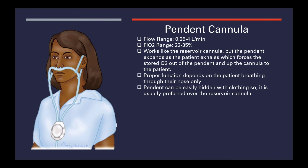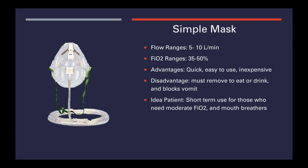The pendant cannula has the exact same flow range and FiO2 as the reservoir cannula. It works similarly except that the pendant expands as the patient exhales, which forces stored oxygen out of the pendant and up into the nasal cannula for the patient to inhale. Proper function depends on the patient breathing through their nose — that's the only way it activates to deliver oxygen. The pendant can be easily hidden with clothing, so it's usually preferred over the reservoir cannula.